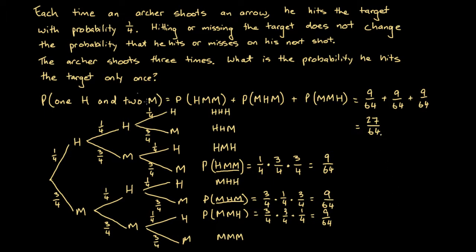If we were to consider the archer shooting 30 or 300 times and asked for the probability of hitting only once, this would be an inefficient method because we'd get a larger and larger tree diagram with every additional shot. However, when we've only got three shots it works well, and it's also good for visualizing the problem. For a small number of stages to consider, drawing a probability tree diagram is a good idea.